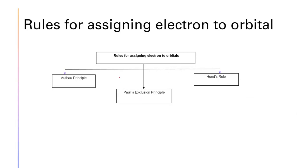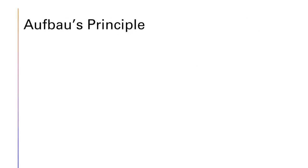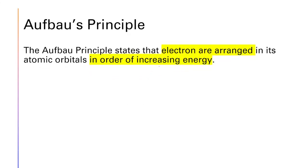To assign electrons to orbitals we need to know three rules: the Aufbau principle, Pauli exclusion principle, and Hund's rule. The Aufbau principle states that electrons are arranged in order of increasing energy.